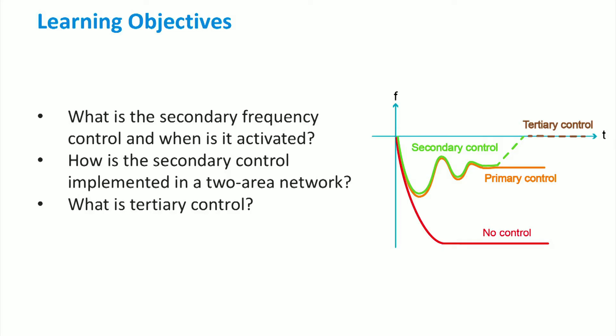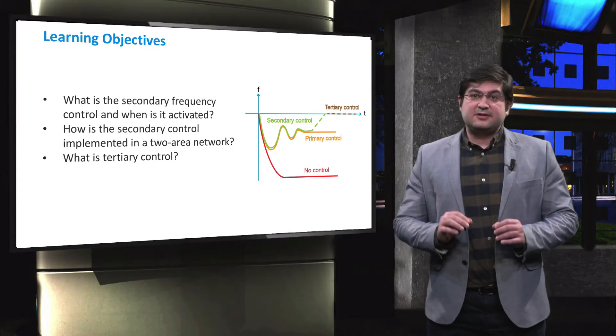We address three main learning objectives. Firstly, what is the secondary frequency control and when it is activated? Secondly, how the secondary control is implemented in a two-area network? Thirdly, what is the tertiary control?